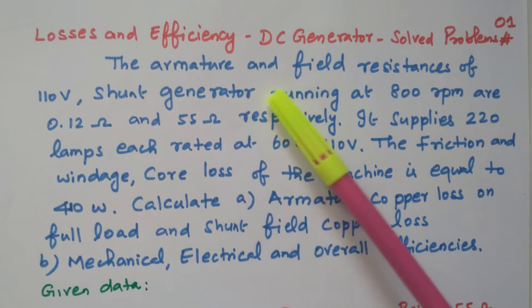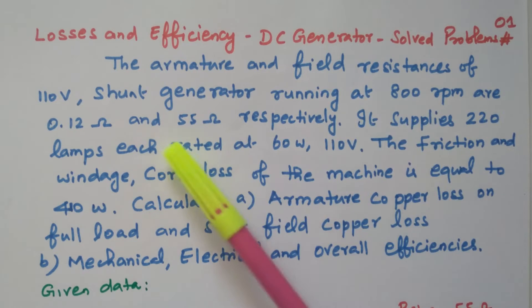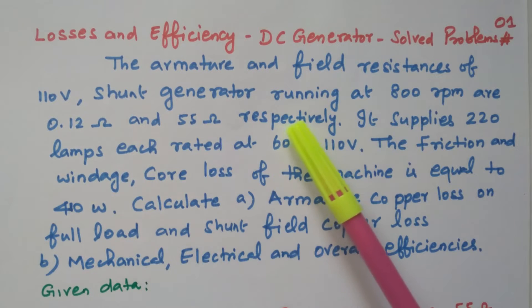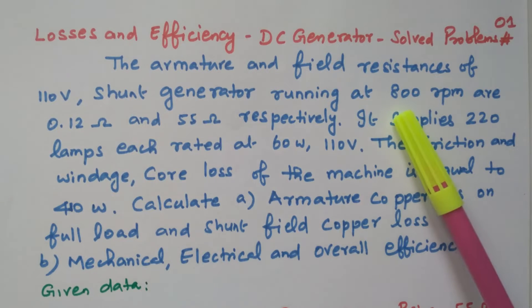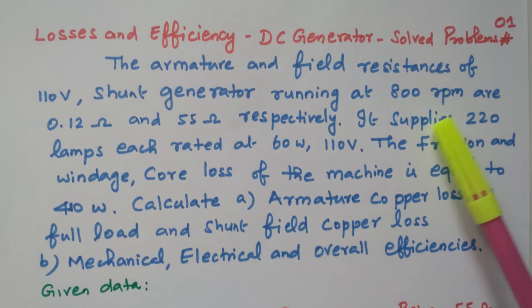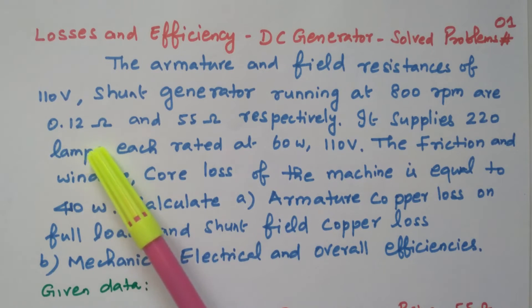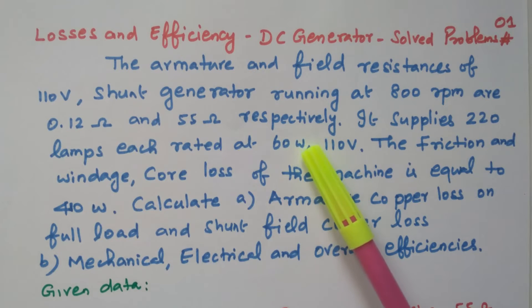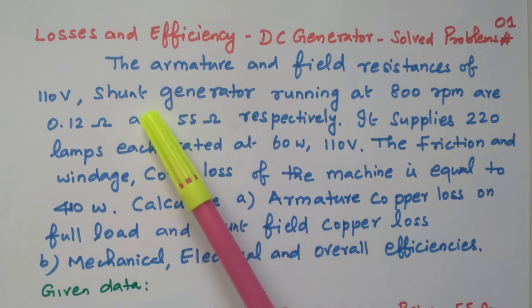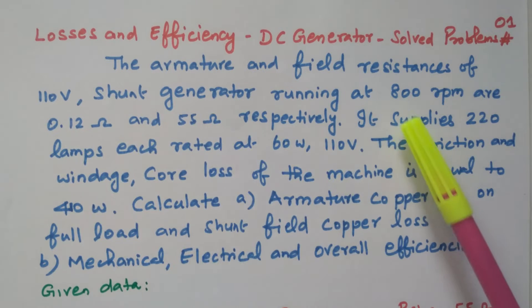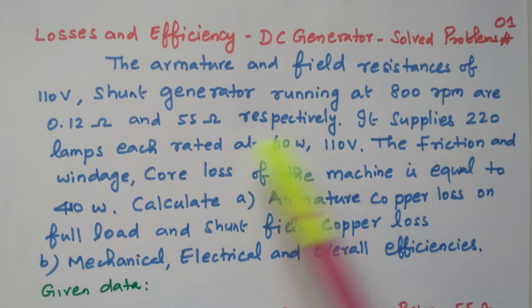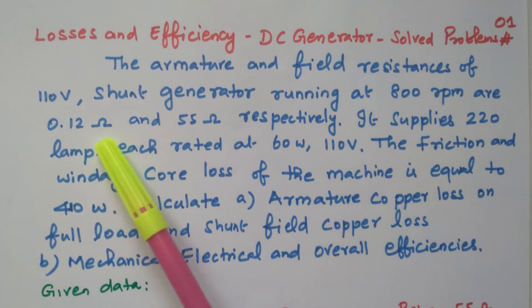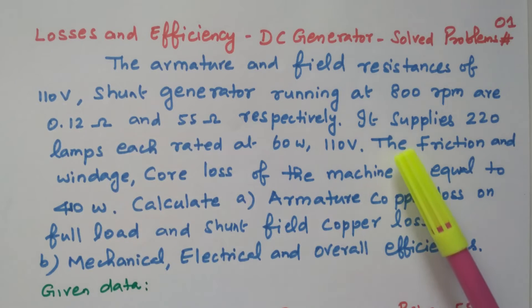The armature and field resistance of a 110-volt shunt generator running at 800 rpm are 0.12 ohm and 55 ohm respectively. So this is coming under shunt generator. The speed is given, voltage is given, armature and field resistance are available.